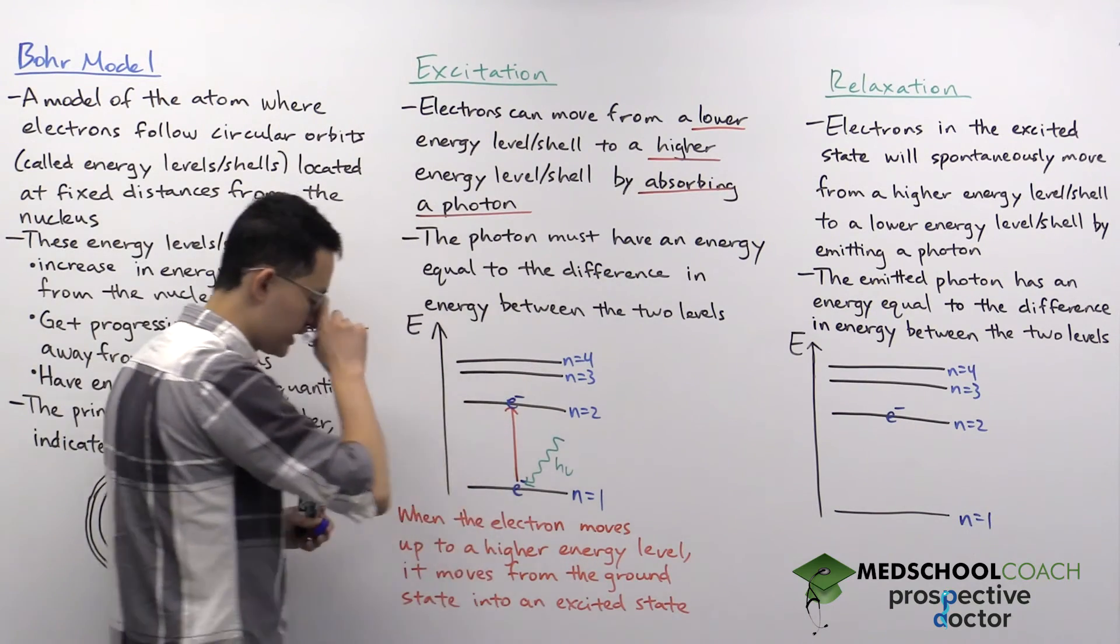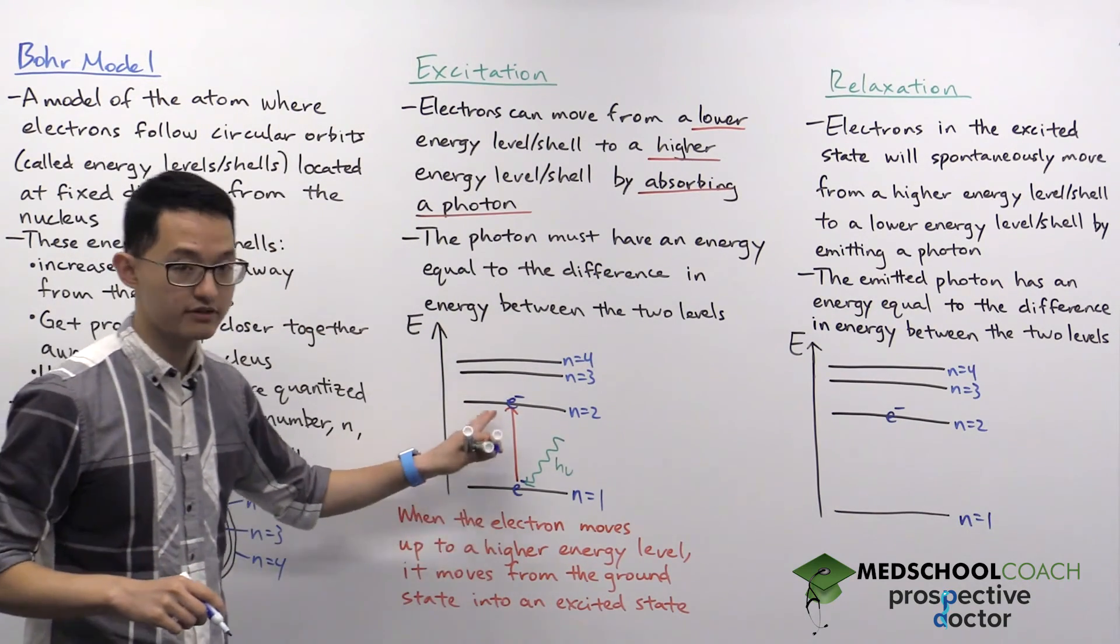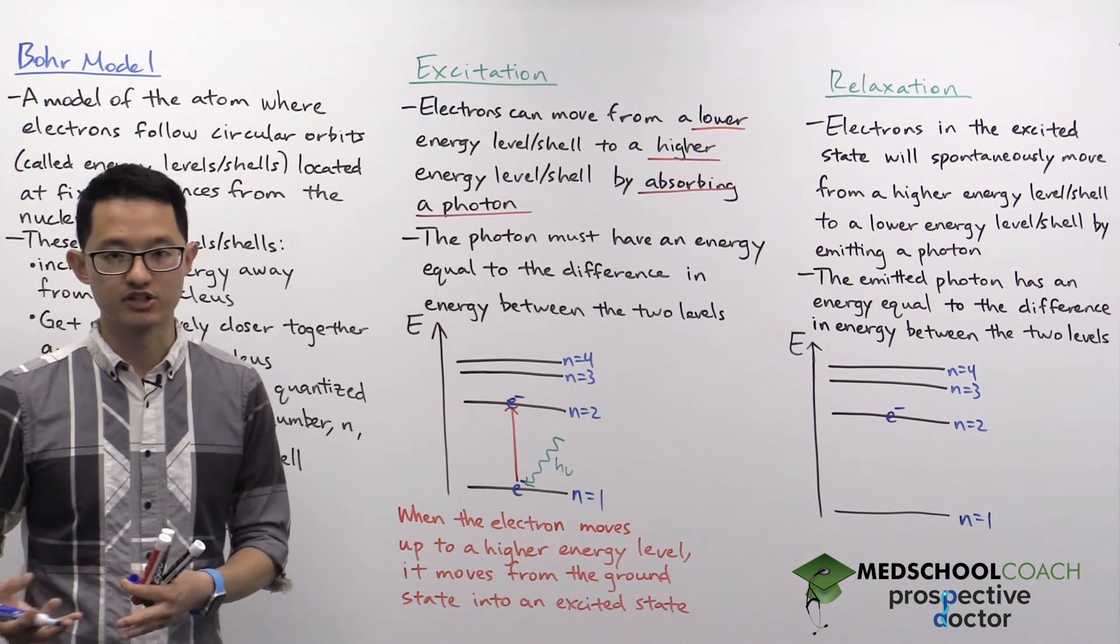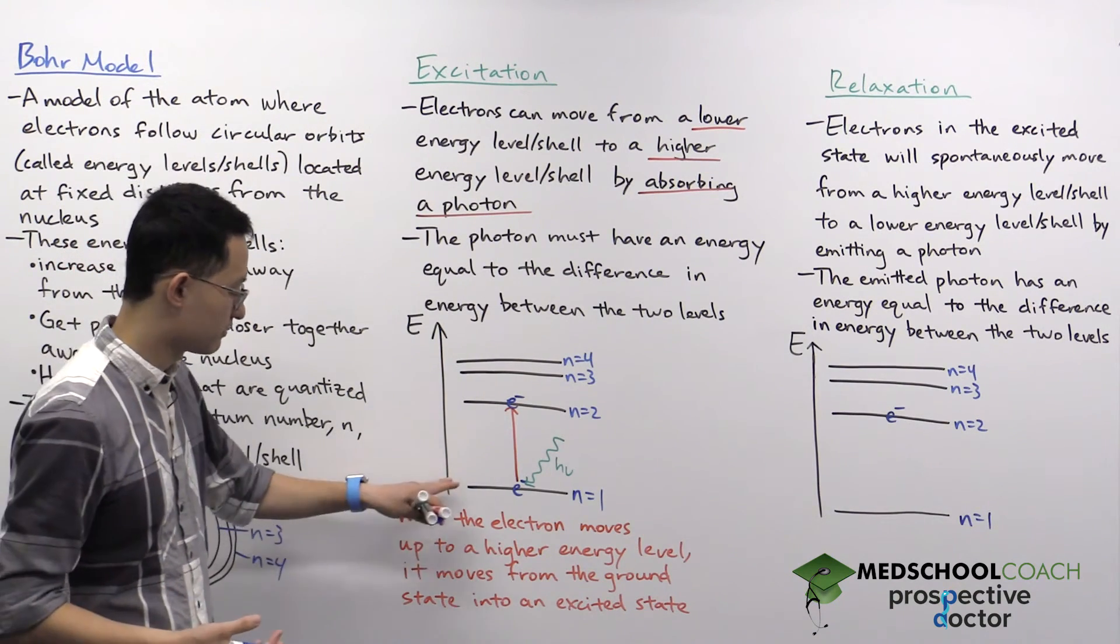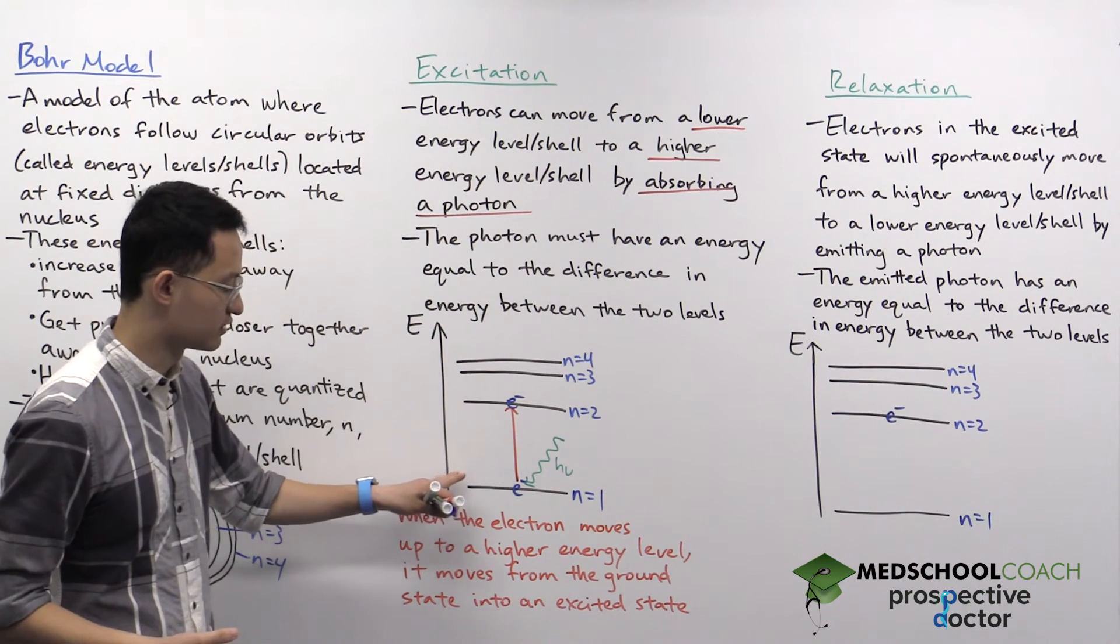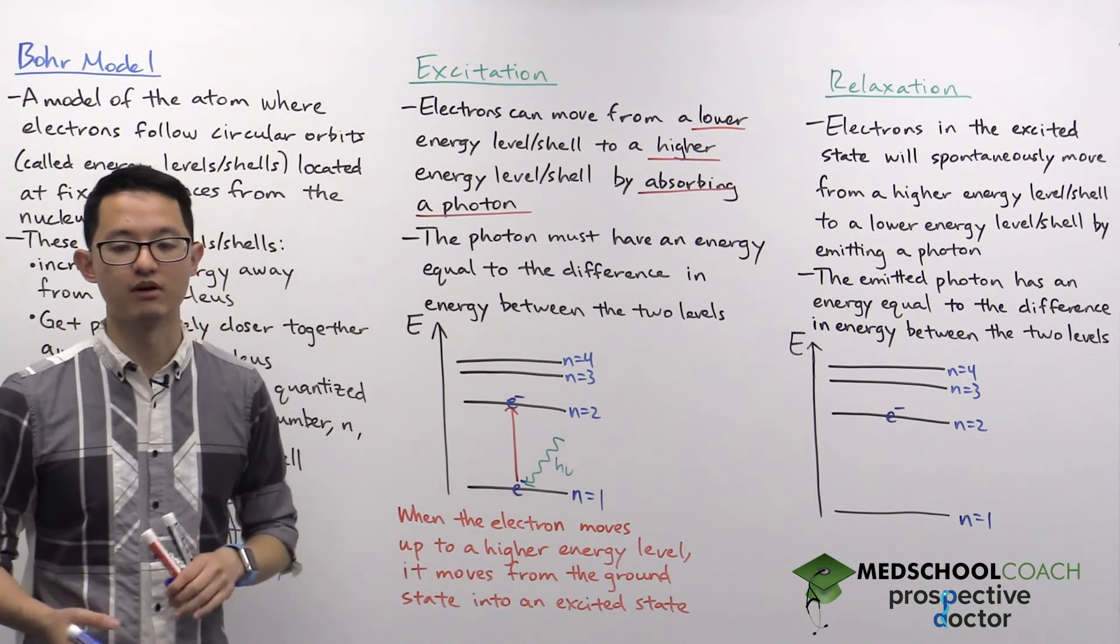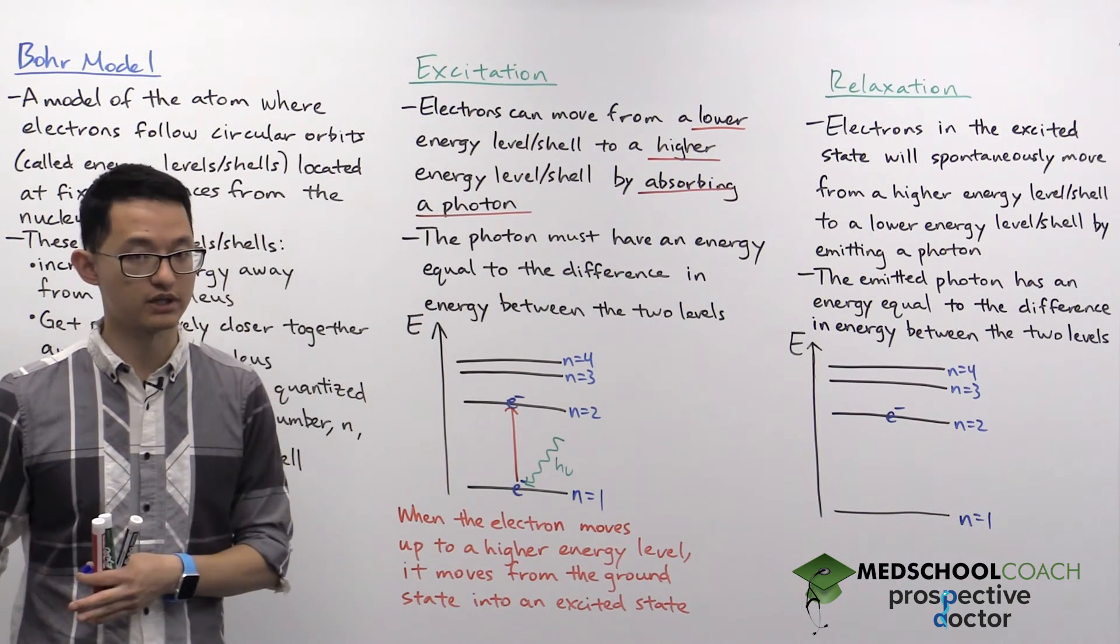Another thing I want to mention is here we did move from the first shell to the second shell. It's possible for you to move more than one shell. So again, if you absorb the exact amount of energy equal to the difference in energies between the first and the third shell, you can just move straight from N equals one to N equals three.